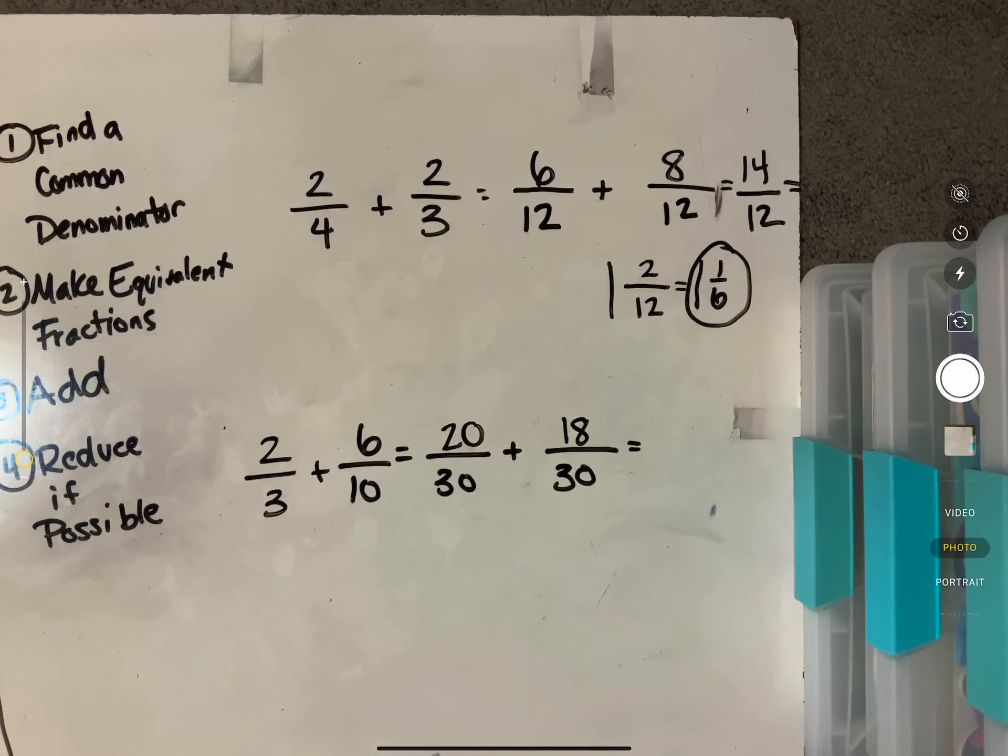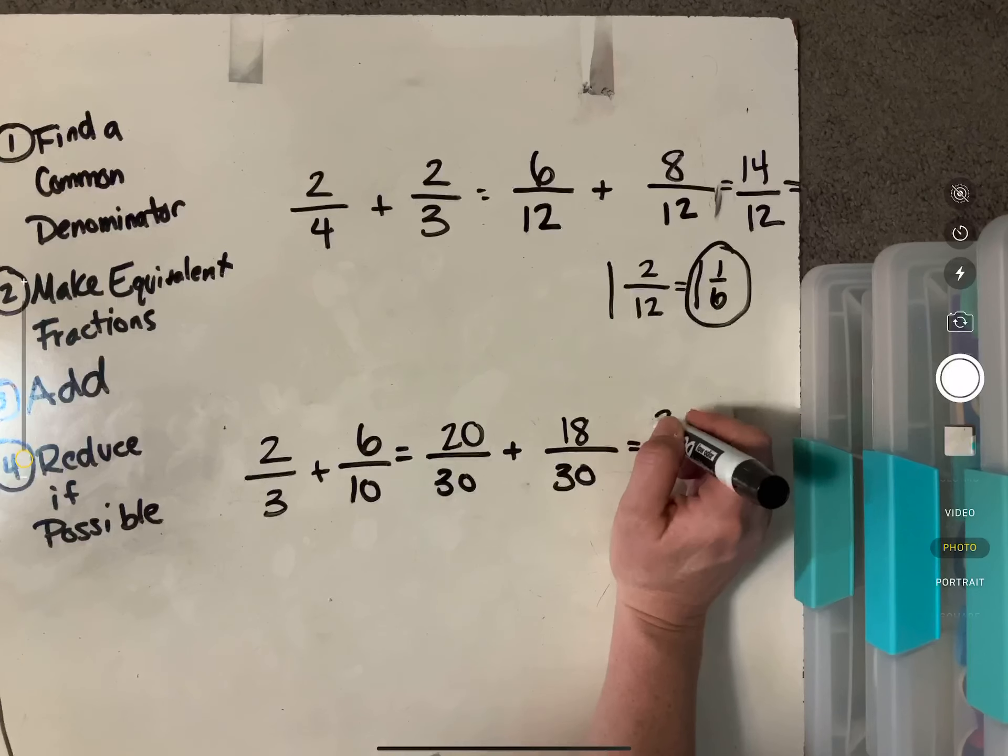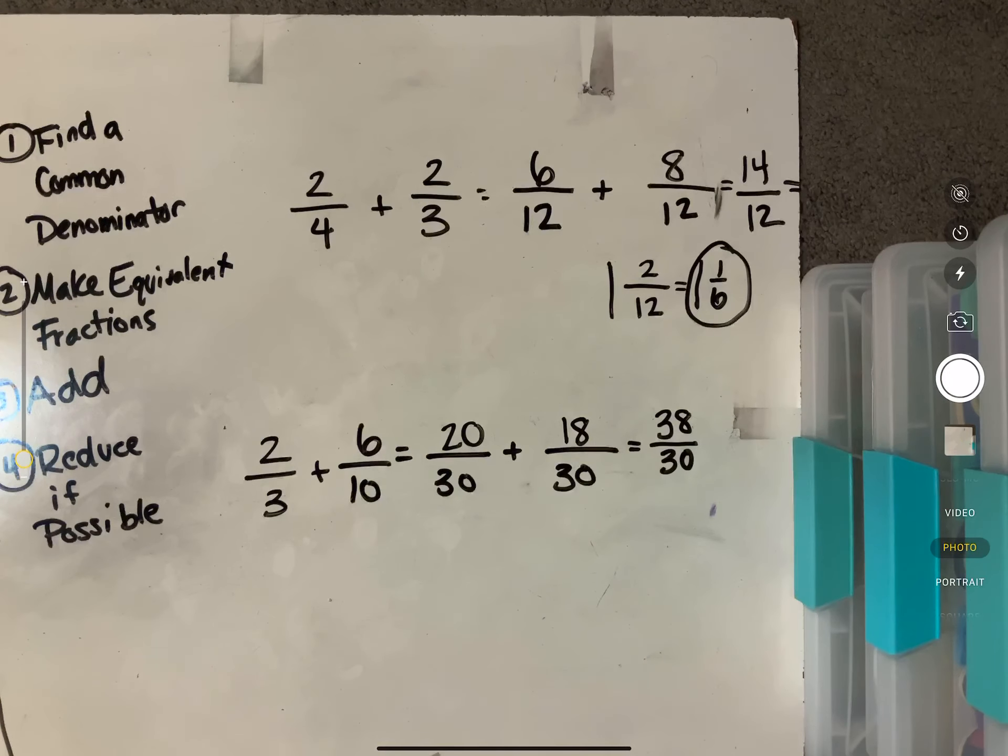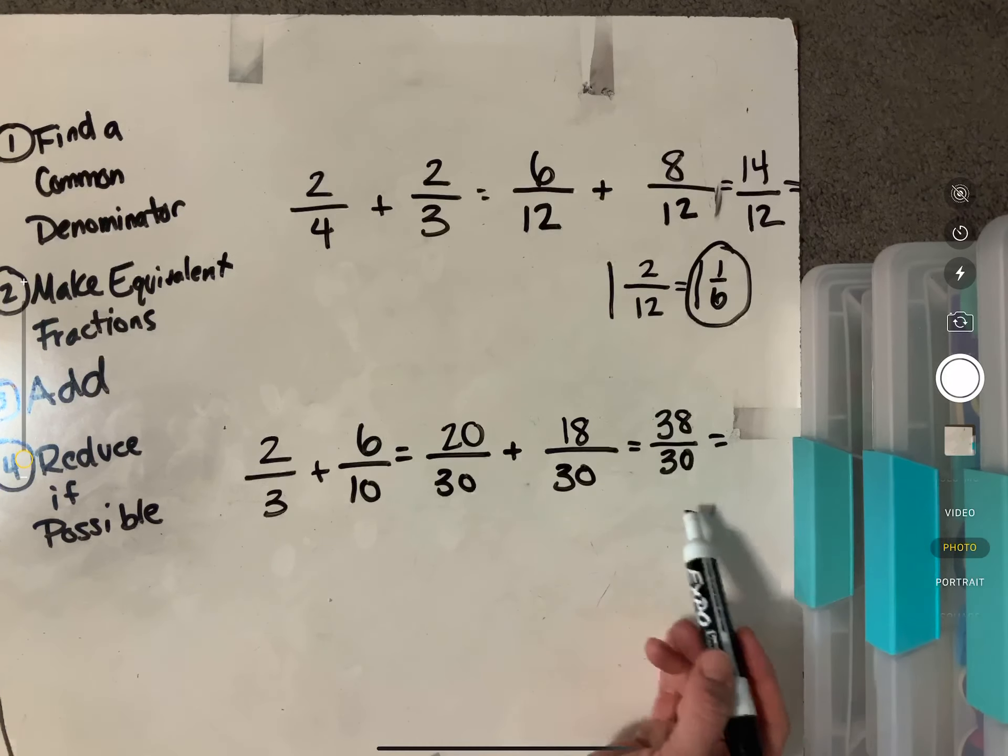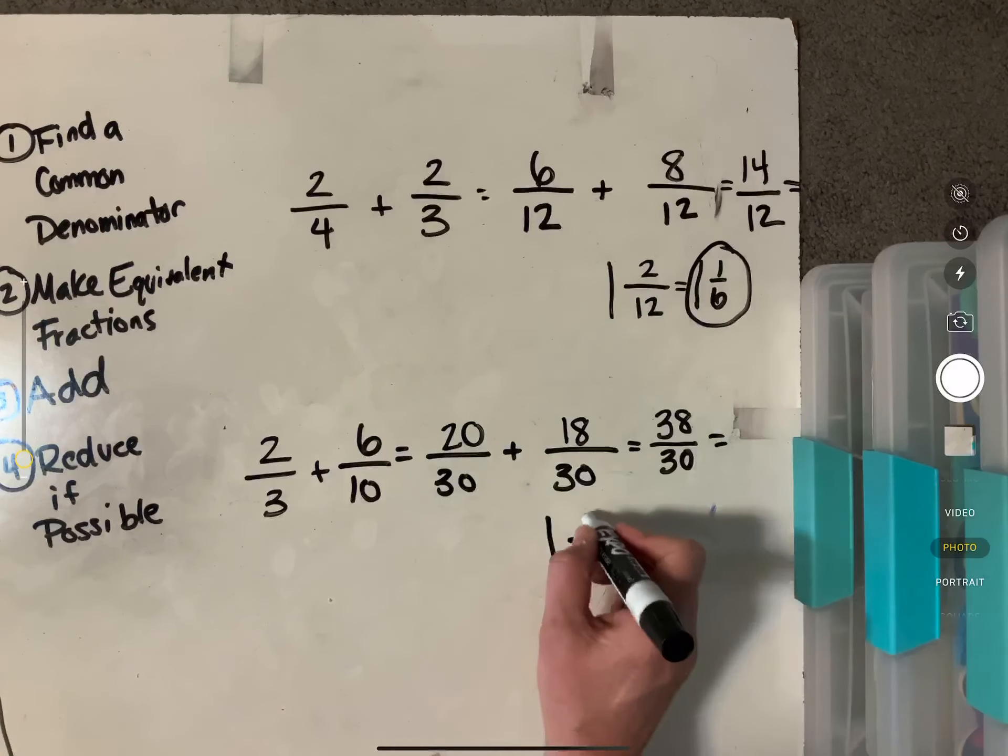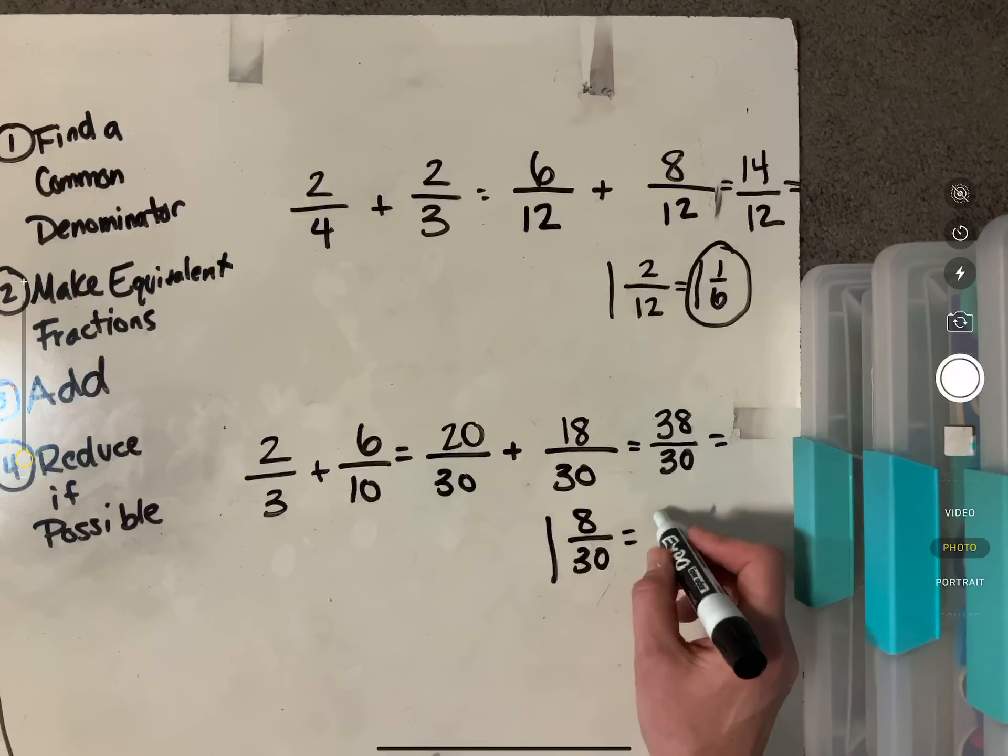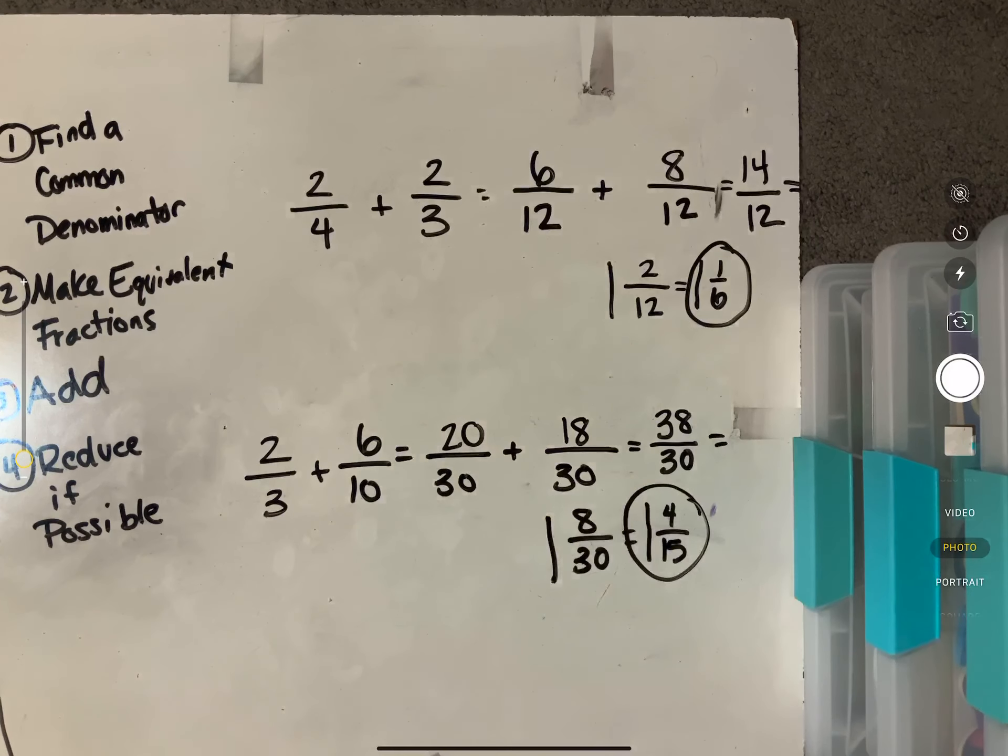So now when we add this up, we're going to have 20 plus 18 would be 38 over 30. And we can reduce this again. I'm running out of room here, but 30 goes into 38, one whole time with how many leftover eight and 30 is our denominator. Now I can reduce this again because they're both even. So one and four fifteenths would be our answer there.